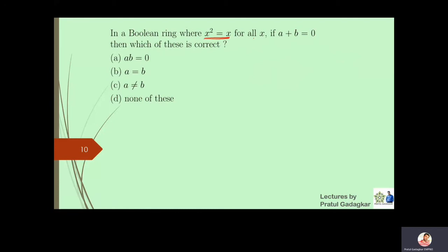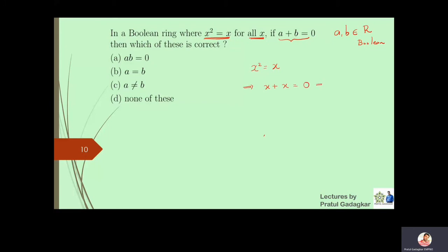The next question involves a Boolean ring, where x² = x for all x. Suppose a and b are in the Boolean ring and a + b = 0. What can we say about a and b? In a Boolean ring, we have proved that x + x = 0 for all x, meaning 2x = 0. In short, the characteristic of a Boolean ring is always 2.